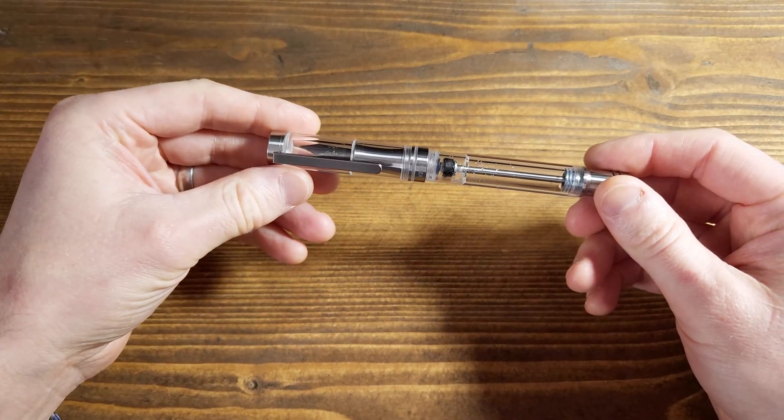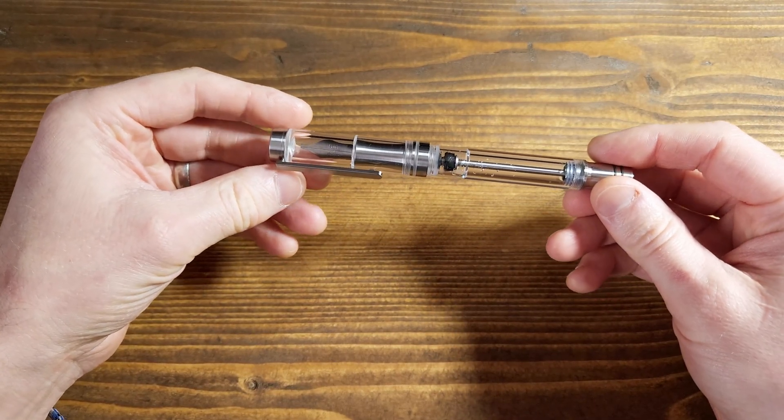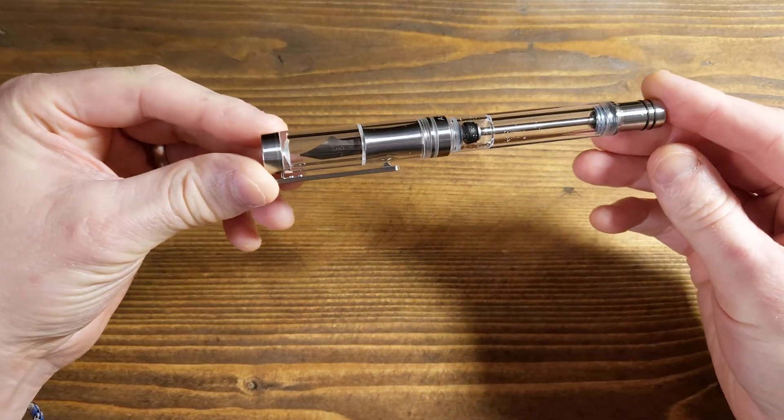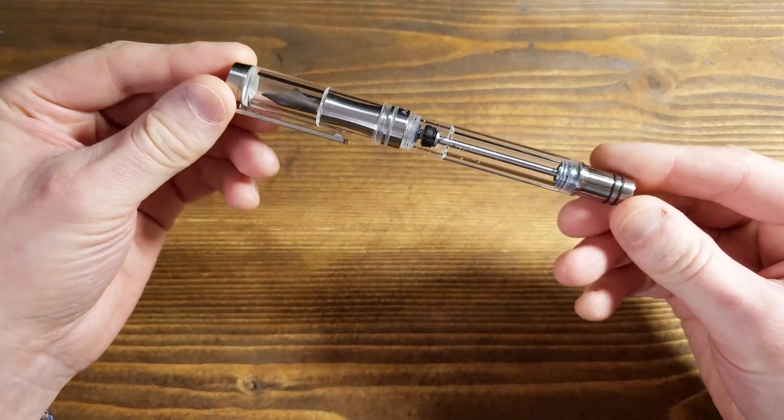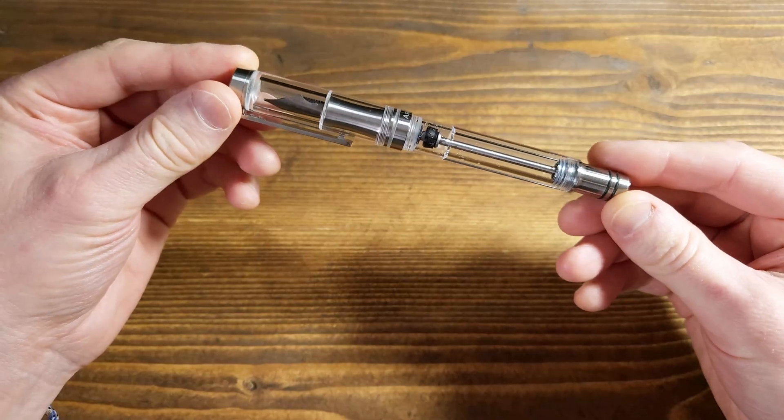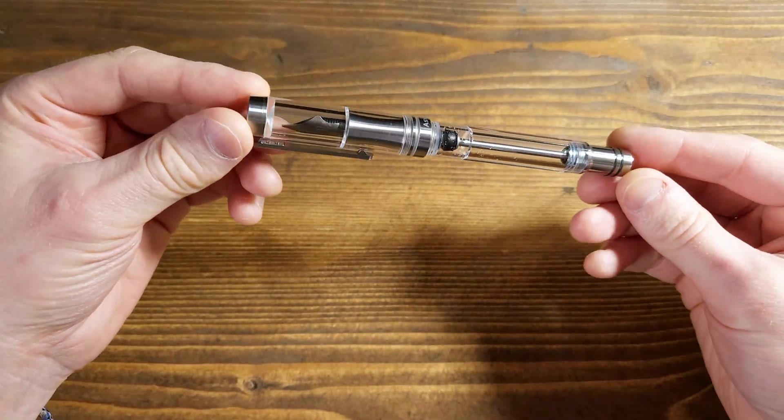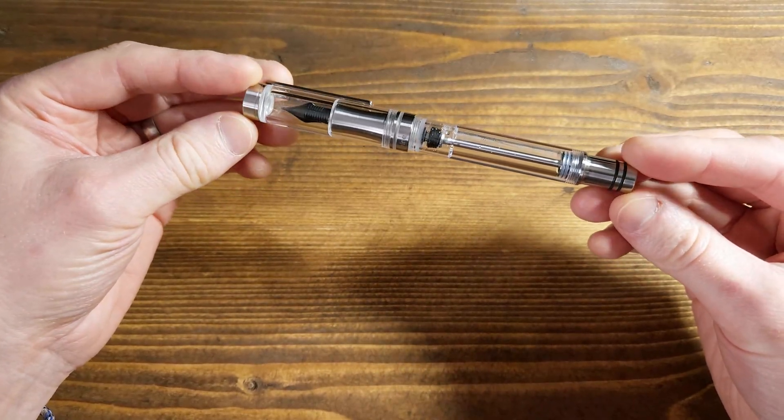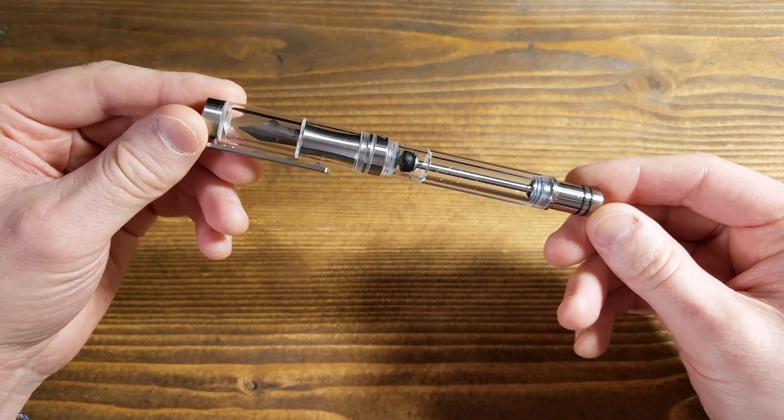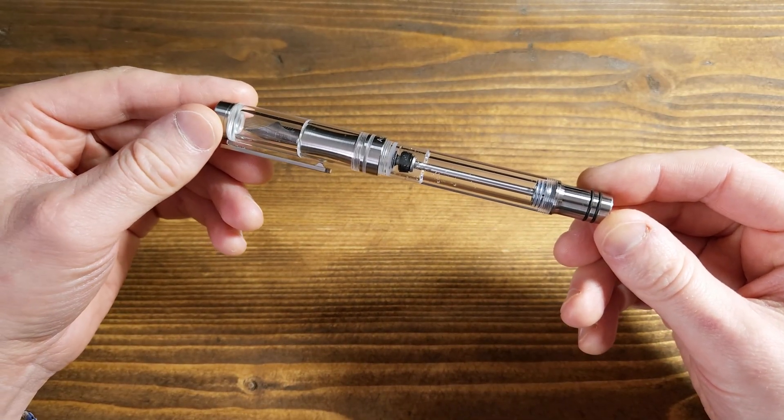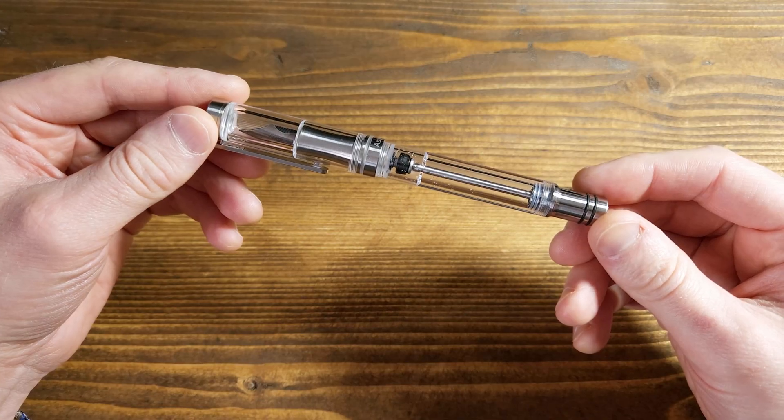Everyone, welcome back to the channel. Today we're diving into something that's part science and part art: anodizing. More specifically, how to anodize this Asfine V200 titanium fountain pen to give it a stunning custom look and added durability. Anodizing is an electrochemical process that not only enhances the metal's appearance but also protects it from wear and corrosion.